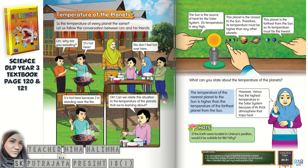It's just like wearing a blanket — don't you feel really hot under a blanket? The blanket traps the heat. That is why Venus is the hottest planet in the solar system. Venus has a thick atmosphere that traps heat, which is why it is the hottest planet — not Mercury.